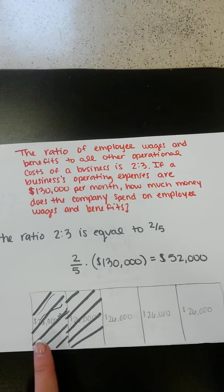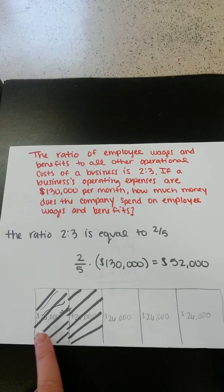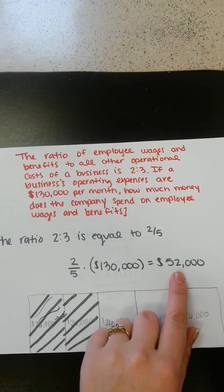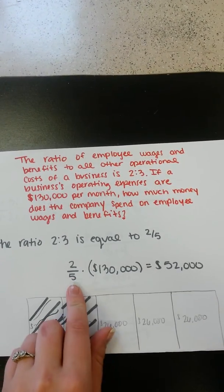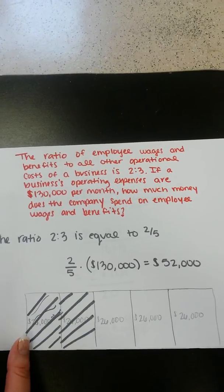Or you can look at it as each fifth is $26,000. We have 2 of those, so 26 and 26 is $52,000. Or as I said, you can multiply 2 fifths times $130,000 and you get $52,000.